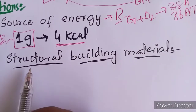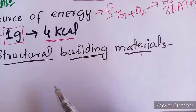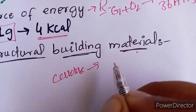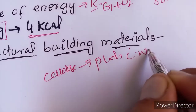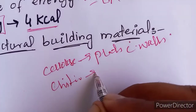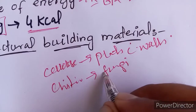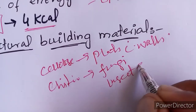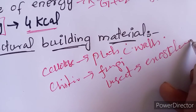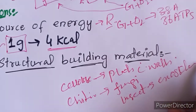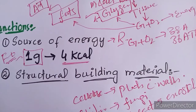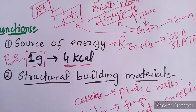Carbohydrates also serve as structural building materials. For example, cellulose is the major component of plant cell walls. Chitin is found in fungi, and it is also a major component of the exoskeleton of insects. This concludes the topic of carbohydrates and its different aspects. If you have any problems or questions, thank you for watching.